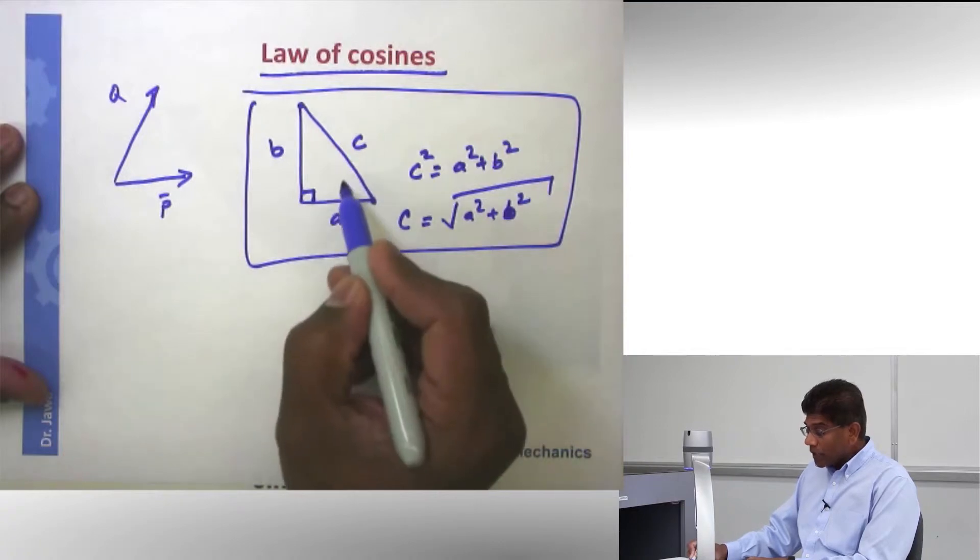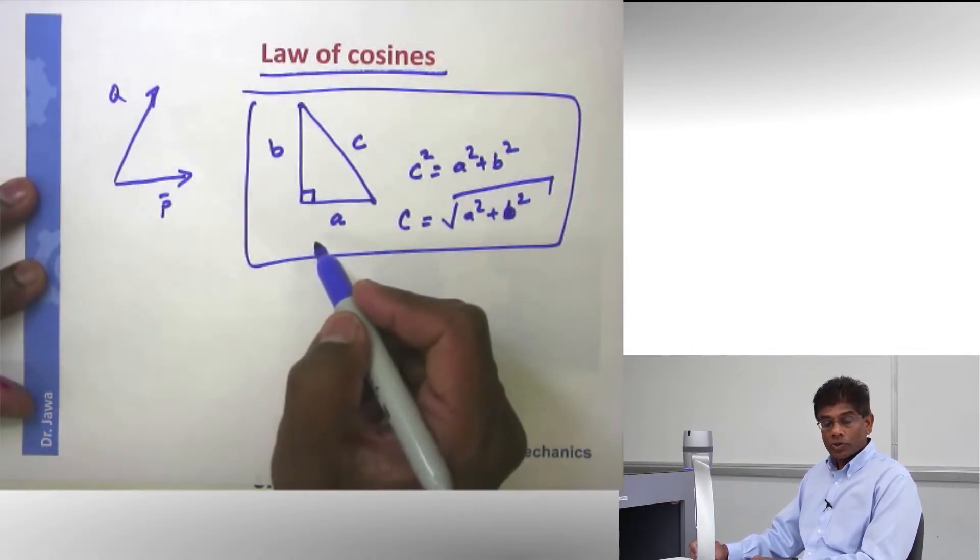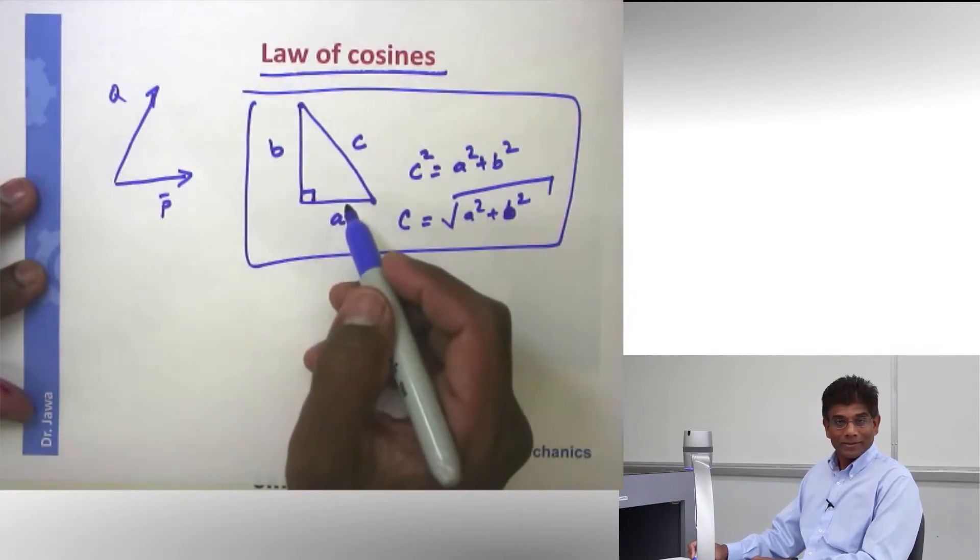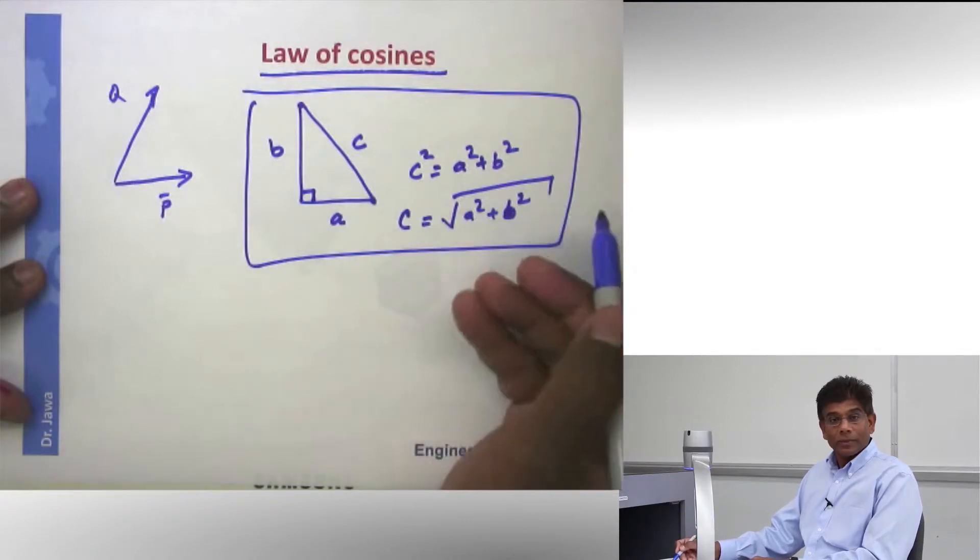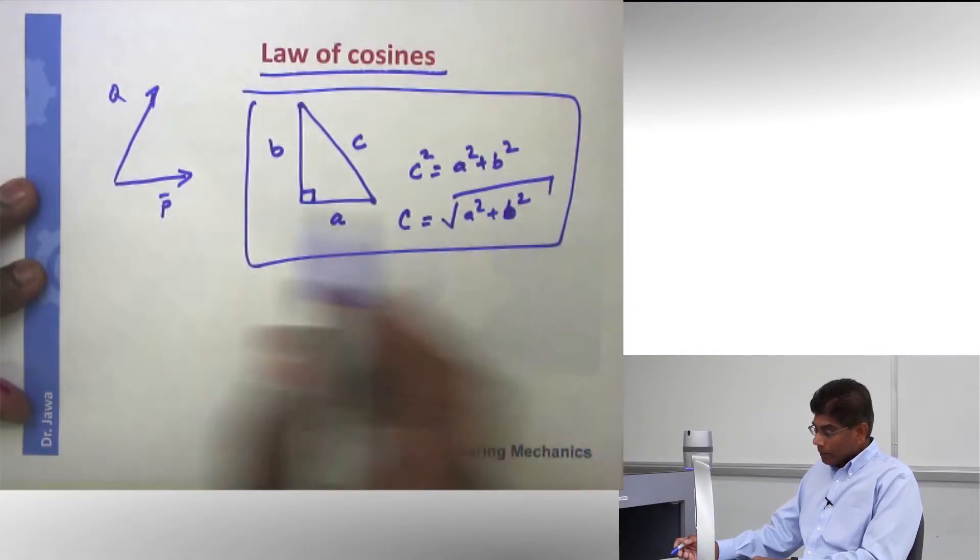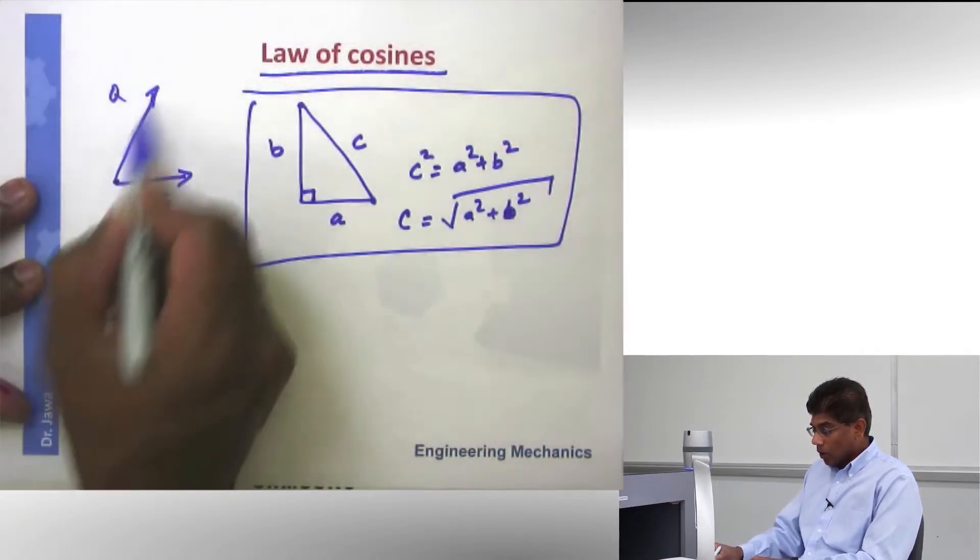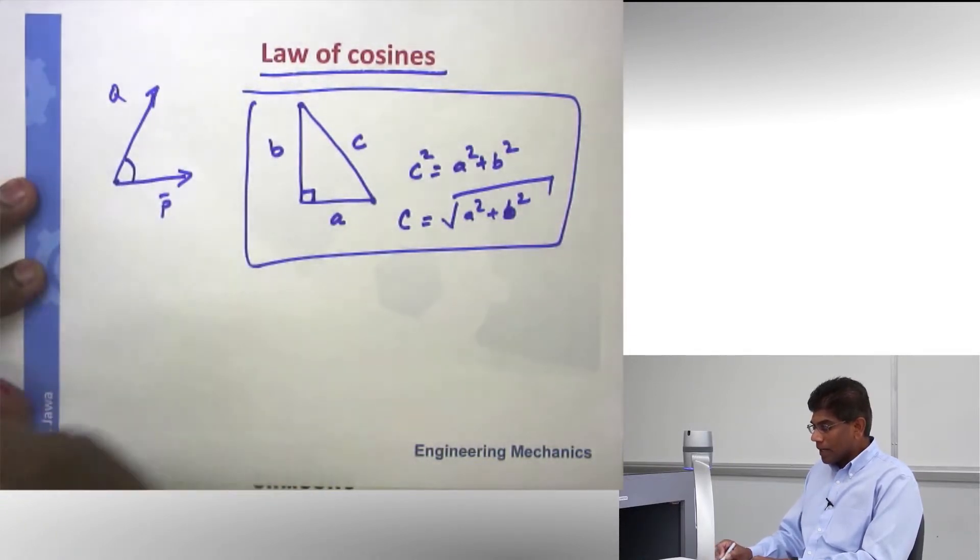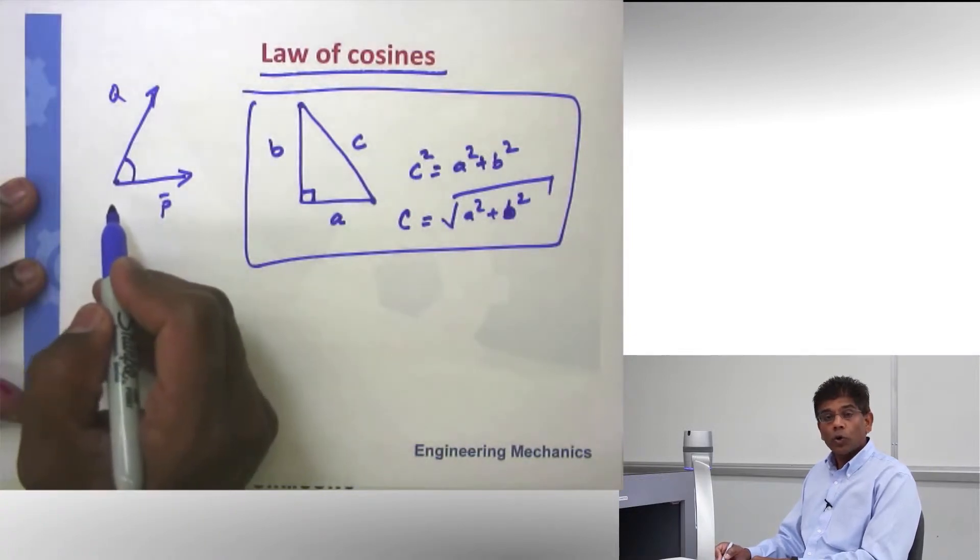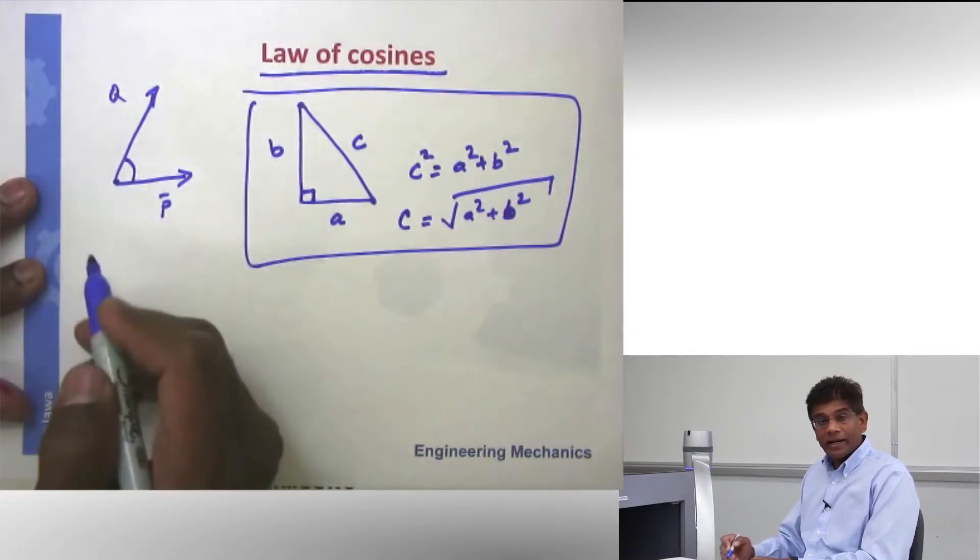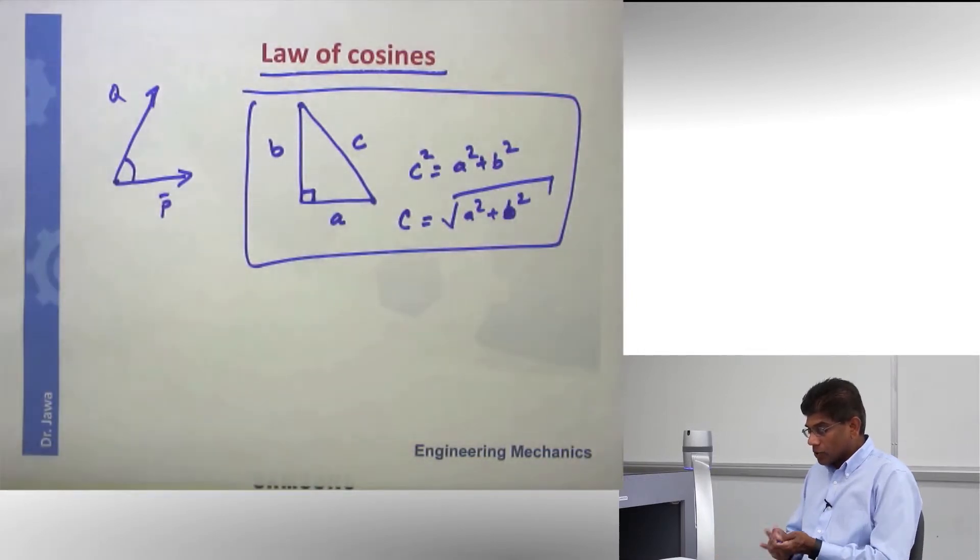Now, when you deal with right triangles, life is easy. In fact, I always tell my students you should get excited when you see a right triangle, because the only theorem there is the Pythagorean theorem. You can solve it. But now, if you look at this parallelogram or these two vectors, they're making a non-90 degree angle. It could be obtuse or acute, but it is not 90 degrees.